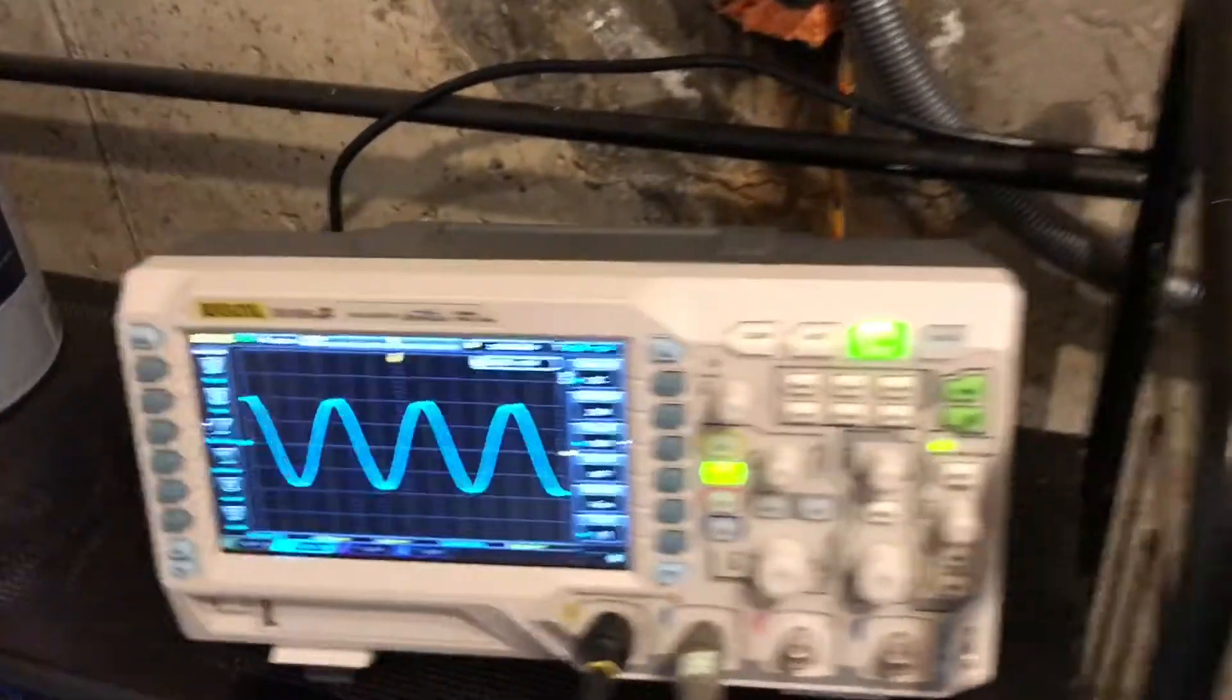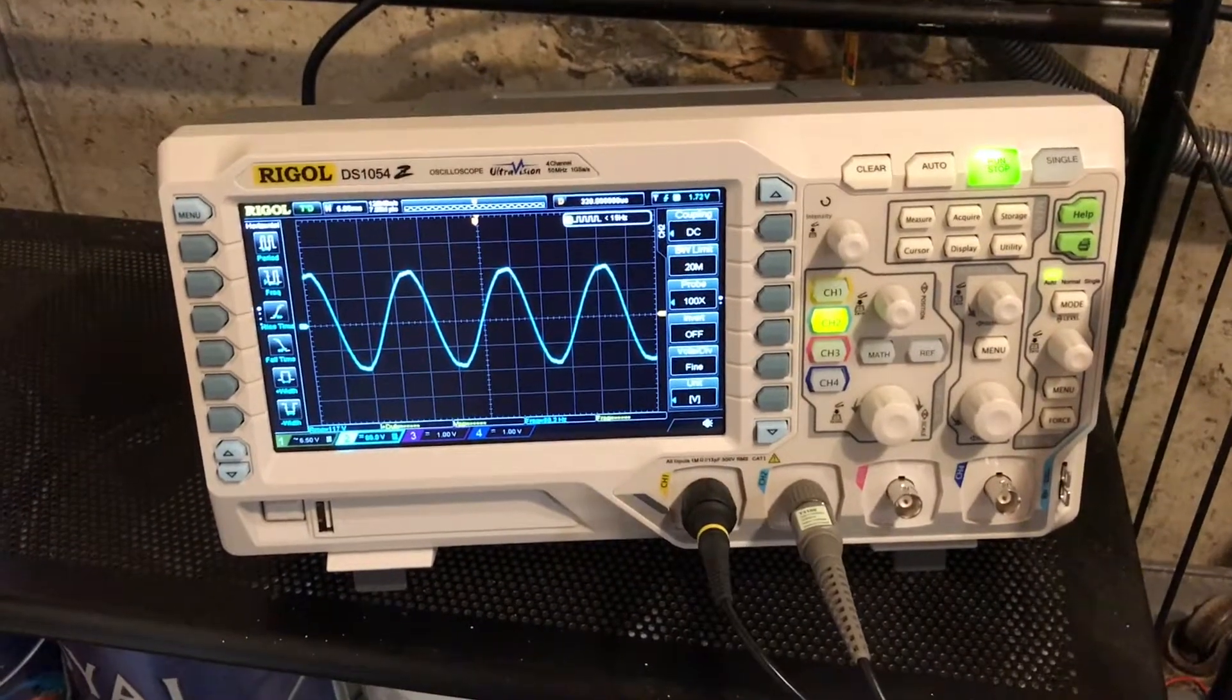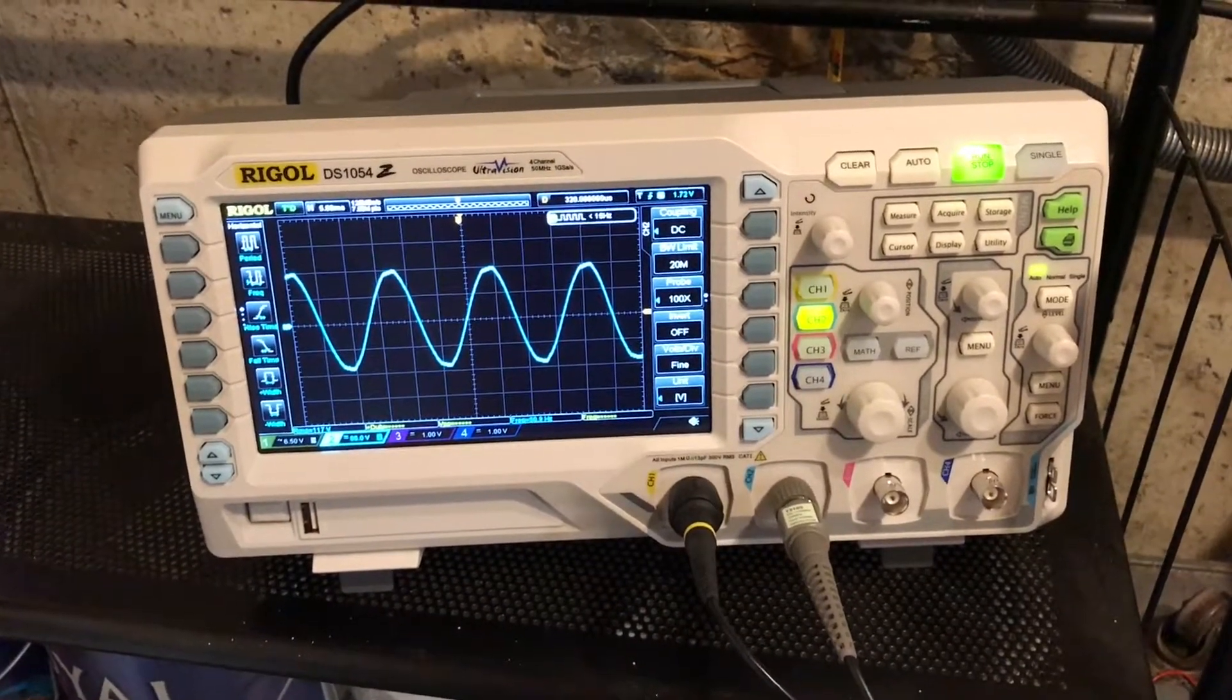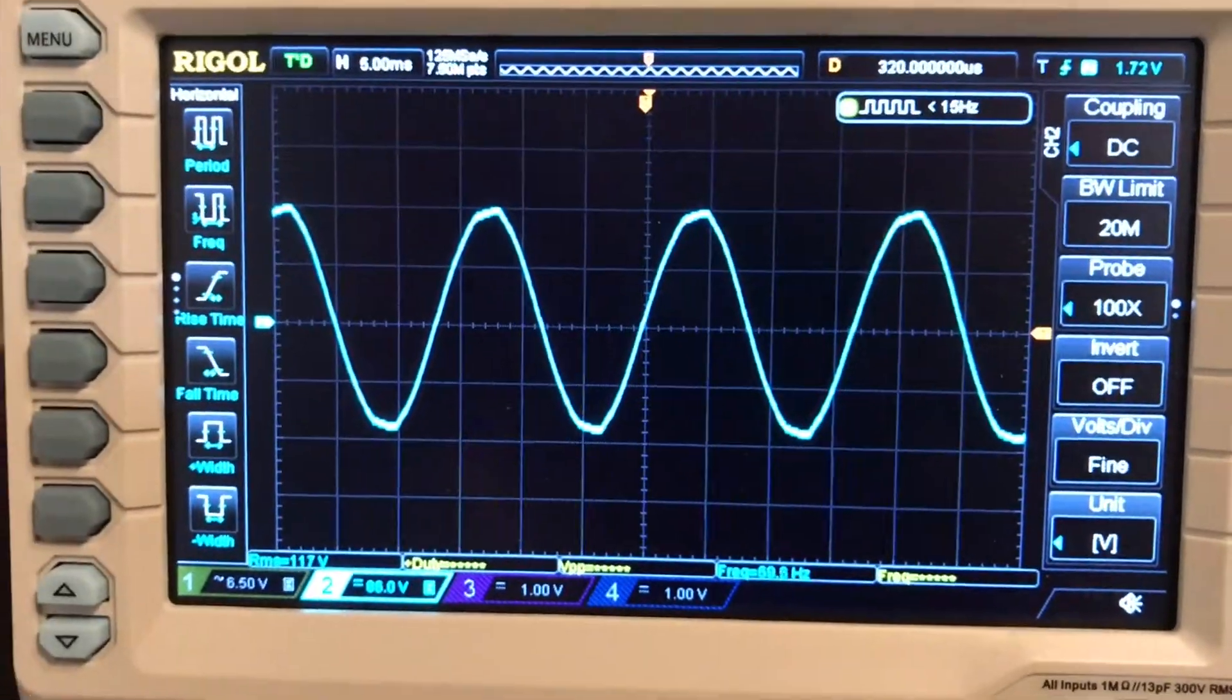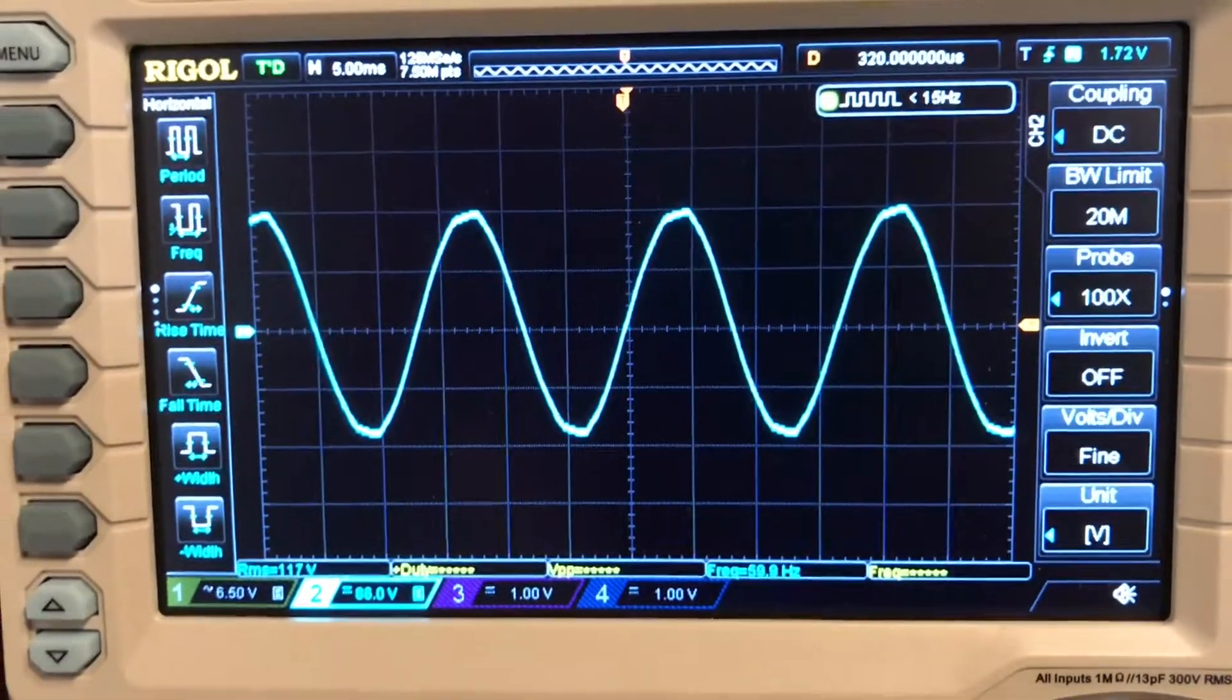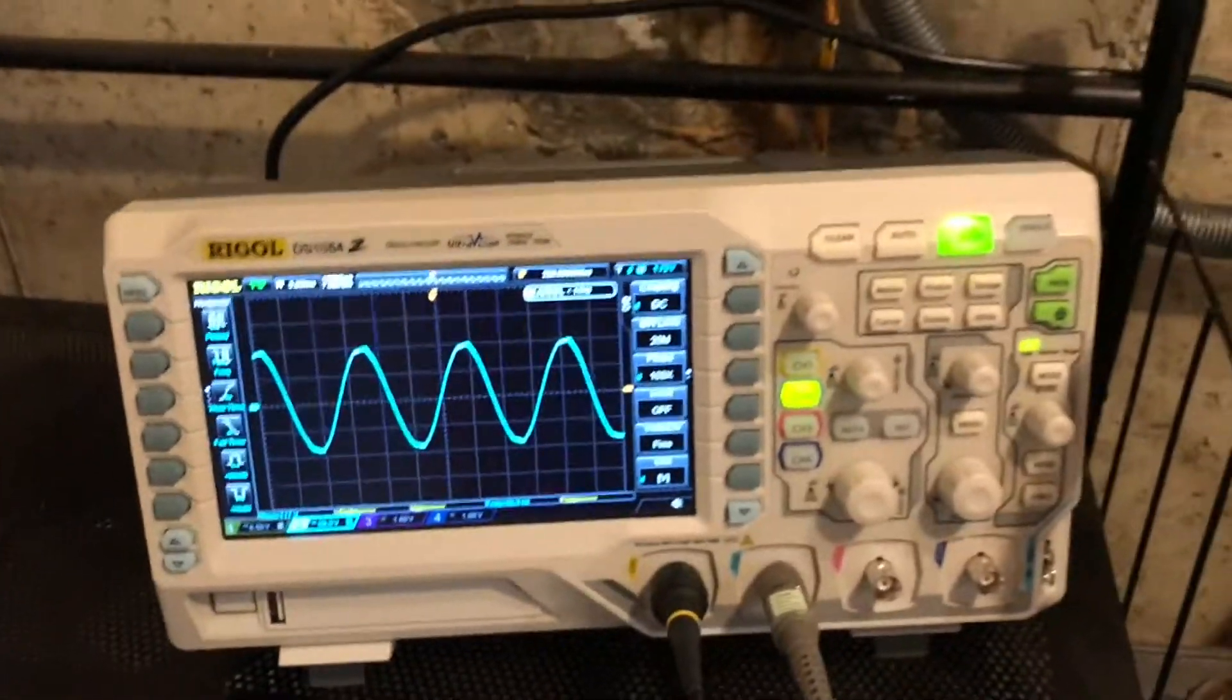What I've done here is set up my oscilloscope with Channel 2 being fed from grid power on a 100-to-1 probe, with the triggering set on that channel. We have a nice stable sine wave there, and the frequency is right about 60 Hertz, just bouncing around. That could even be the scope miscounting it rather than the waveform actually changing.